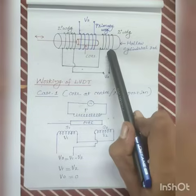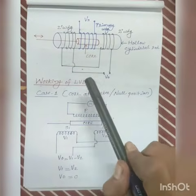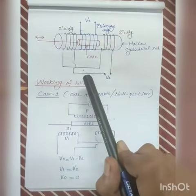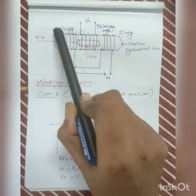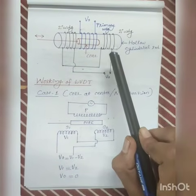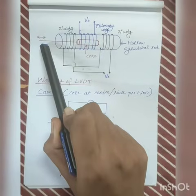The two secondary coils are connected with each other in series opposition. The movable soft iron core is placed inside the hollow cylinder. The moving system whose displacement has to be measured is connected to this core.